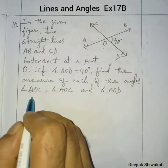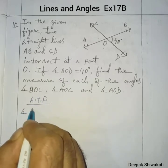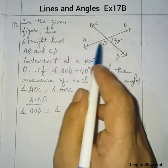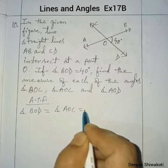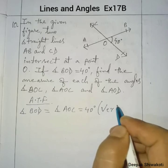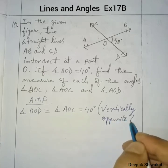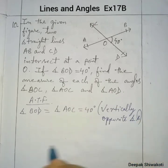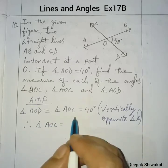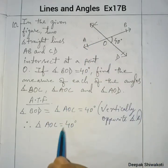According to the figure, angle BOD and angle AOC are vertically opposite angles. Since vertically opposite angles are equal, angle AOC equals angle BOD equals 40 degrees. So angle AOC is 40 degrees.